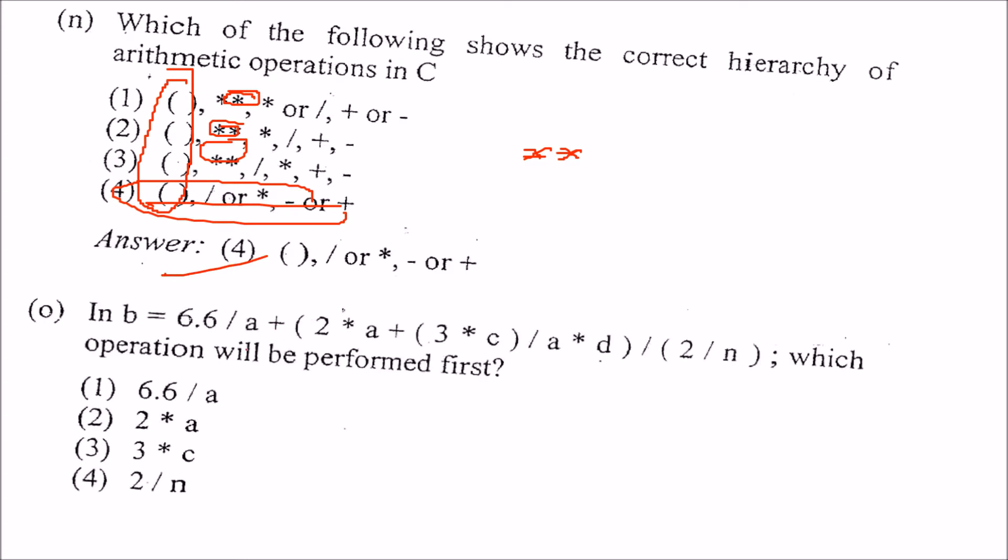Here, which operation will be performed first? C. When we have, we have just seen this question. The round bracket will be performed first. So, the innermost round. Means, if you have round, round bracket, round bracket. So, this will be performed first. 3 star C. This will be the answer. Third one.